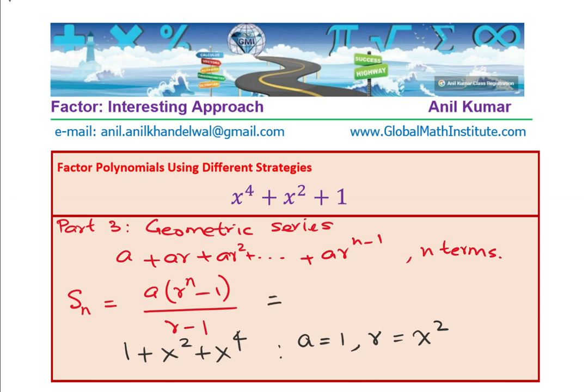Well, applying the formula, I get 1 times R being x square and the number of terms n is 3. So, x square to the power of 3 minus 1 divided by R, which is x square minus 1. You get the idea?